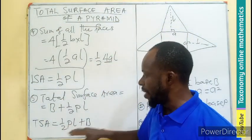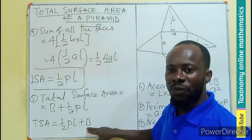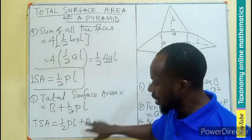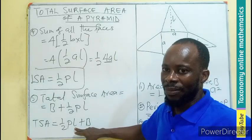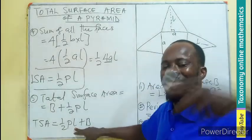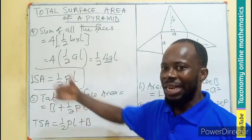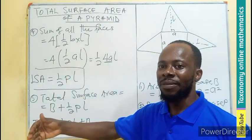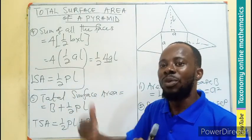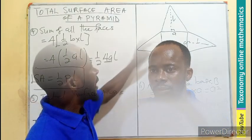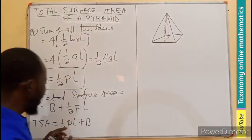Whenever we talk of B, the base, we mean the area of the base. If the base is a triangle, we find the area of a triangle, find the perimeter of that triangle, and multiply by the slant height. If the base is a circle, a similar approach is taken. We will be breaking it down for a triangular pyramid, a square base pyramid, and a circular base pyramid, which we call the cone.